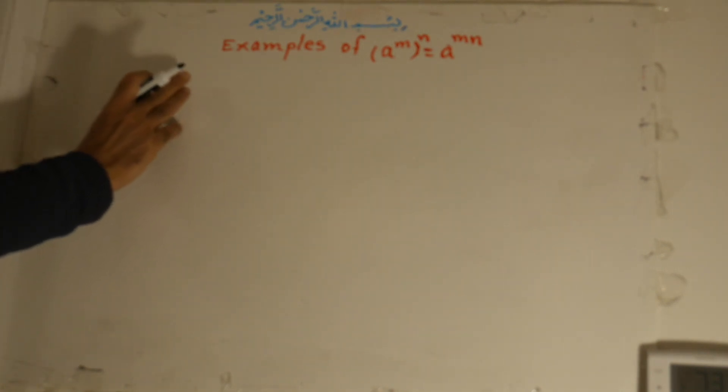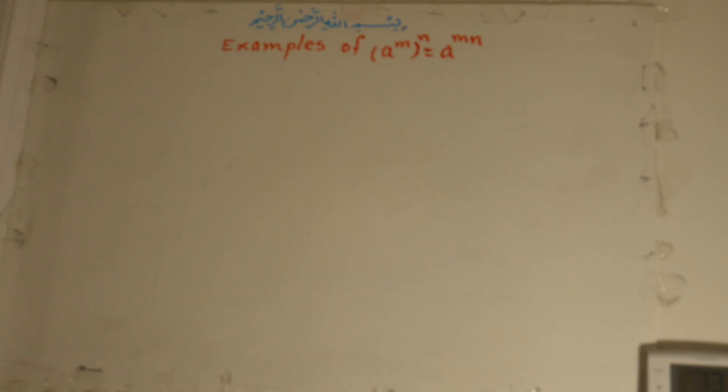We will look at examples of a to the power of n, all to the exponent m, equals a to the power of m times n. In previous lessons we discussed the proof of this formula. Now I want to solve some examples of (a^m)^n = a^(mn).